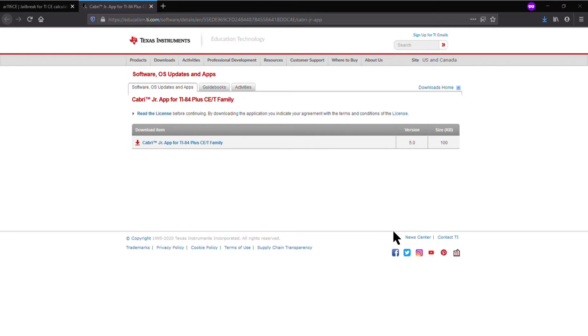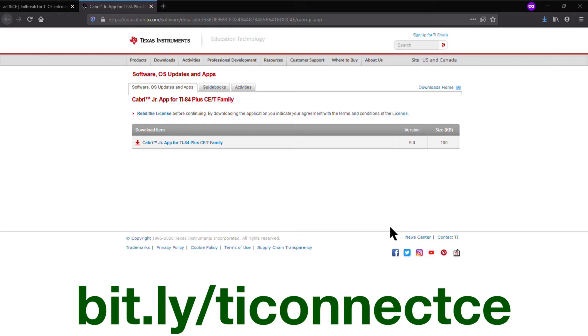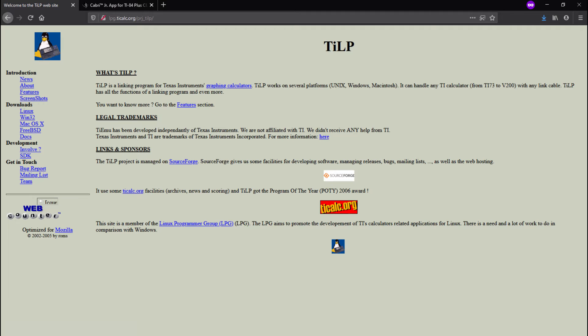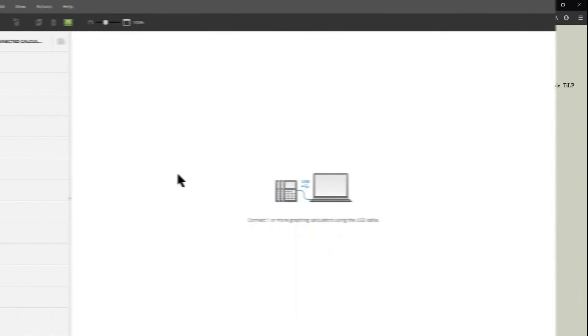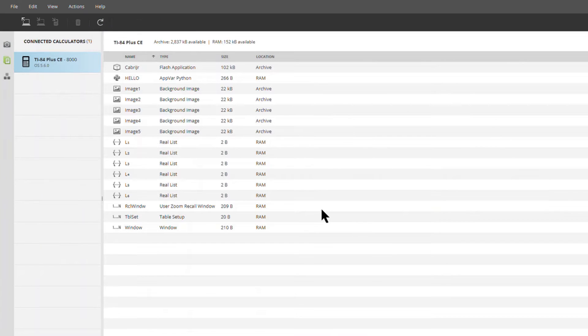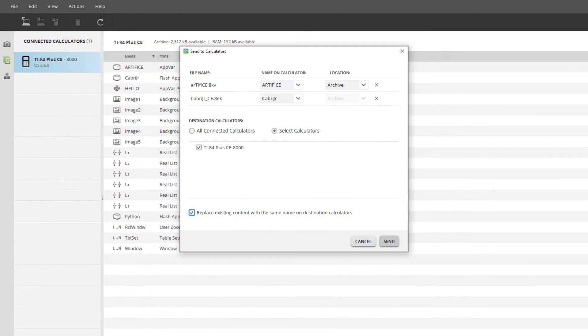Now you have to send them to the calculator. If you don't already have TI Connect CE, you can get it at bit.ly/TIConnectCE. If you're running Linux, use TILP instead. Link is in the description. Once you have your calculator plugged into the computer and TI Connect CE recognizes it, you can drag and drop both your files you downloaded onto the calculator's name. Be sure to select overwrite existing files and click send.